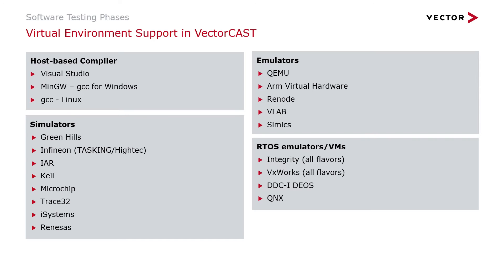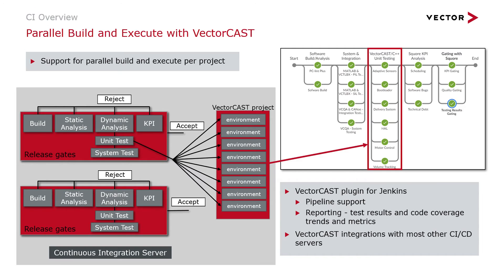VectorCast is designed to be highly customizable — within an hour or two of an FAE's time, Vector can get you up and running in almost any virtual environment, target hardware, or RTOS. So if you need support for one that's not listed, let Vector know. VectorCast supports parallel build and execute on a per-project basis. A VectorCast project is a collection of unit test environments and allows for full parallel execution of all those environments within a project. A full command line interface gives you complete control of the project, or you can use the Jenkins plug-in, which generates pipeline snippets and has full reporting capabilities including code coverage trends and test result trends.